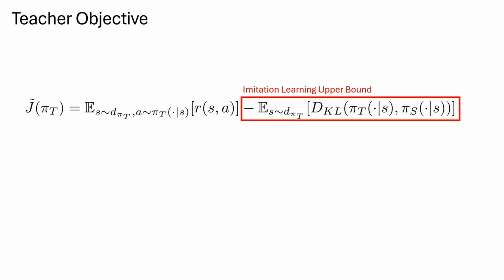Crucially, we add the imitation upper bound between teacher and student performance to the teacher objective. This upper bound can be expressed by the expected action difference between student and teacher under the state distribution of the expert.